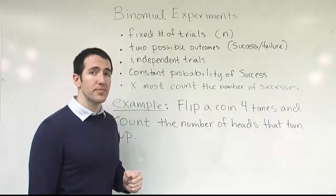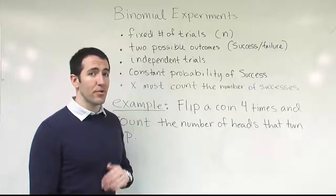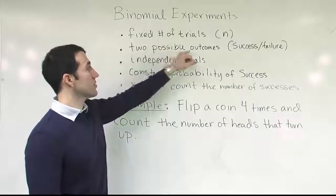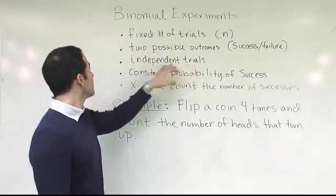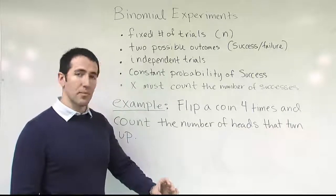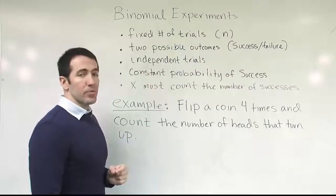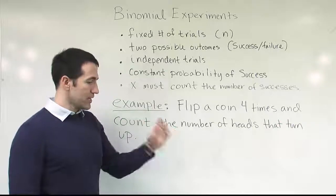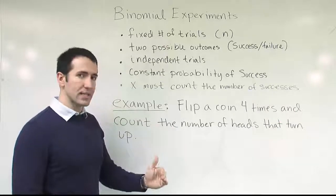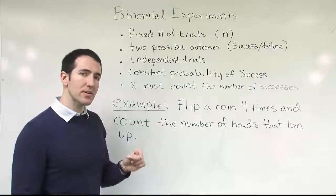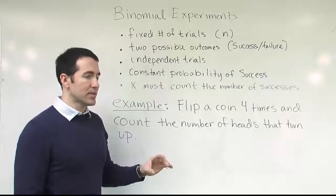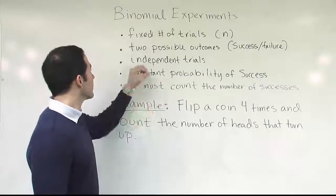You can do this with a whole host of experiments. Rolling a die has six possible outcomes, but if you decide that three is the outcome you're interested in, you can define three as success and all other numbers as failures — converting it to binomial. For independent trials, the outcome of one trial must not affect the outcome of the next. On a multiple choice test, if I take a blind guess on the first question and get it right, that doesn't make it more or less likely that I get the next one right. It's a completely random process, so the trials are independent.